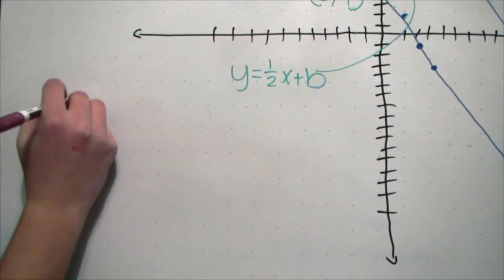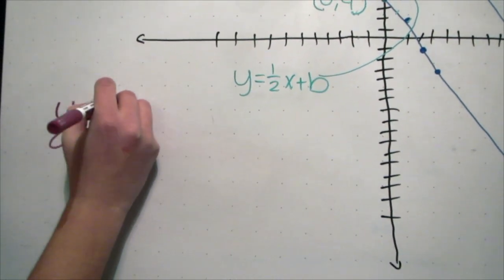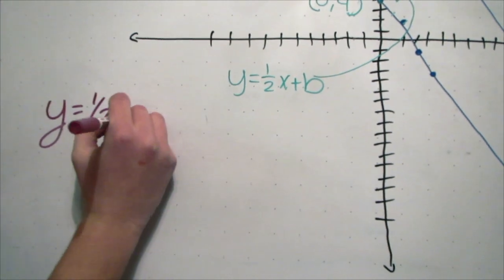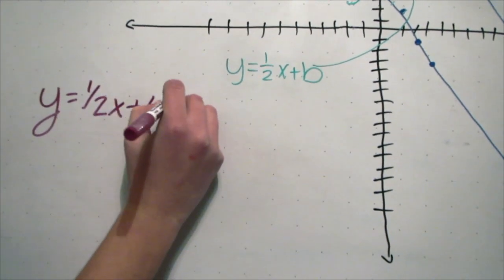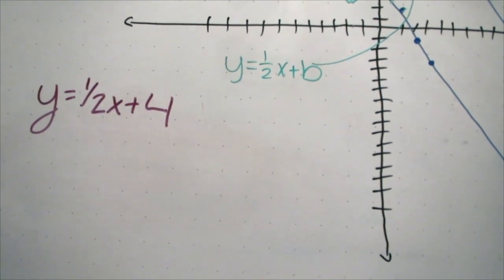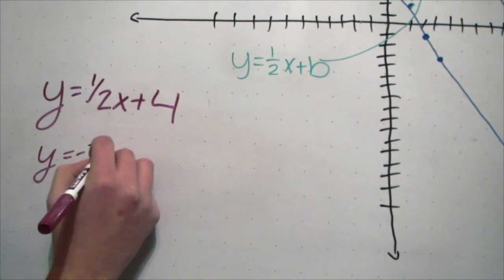Once you find the equation of the line between the two parallel lines, which is y equals 1/2 x plus 4, set the equation equal to the line with the missing coordinate, which is y equals negative 2x plus 14. This will give you the x.